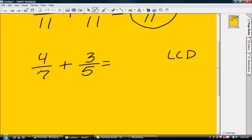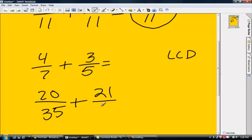So we're going to multiply the 4/7 by 5, and then we're going to multiply the 3/5 by 7. So 5 times 4 is 20, and then 5 times 7 is 35. Plus multiply this side by 7, we're going to get 21 over 35.